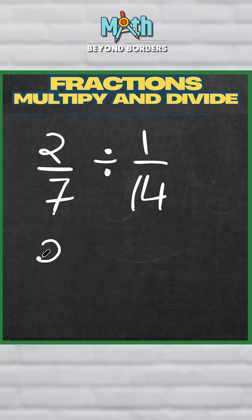Let me show you. All you have to do is flip the second number or inverse the second fraction. Let me show you how. So 2 over 7, and you inverse this. What this means is that it becomes 14 over 1.